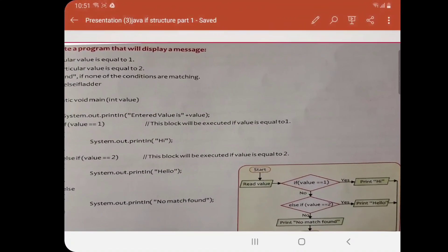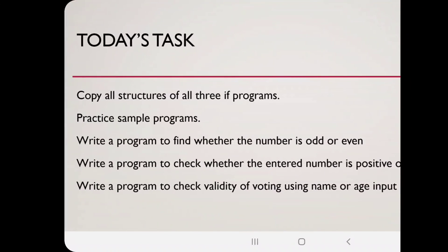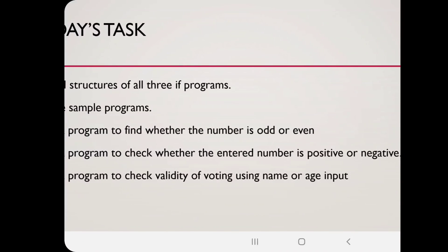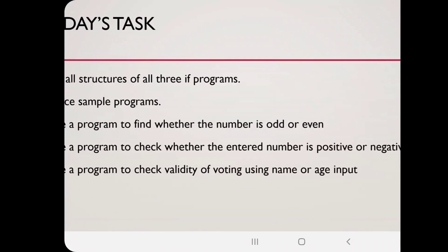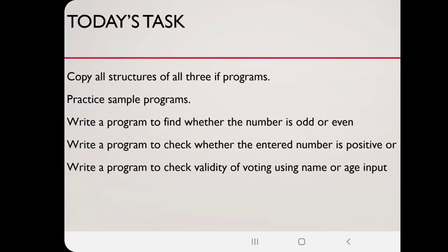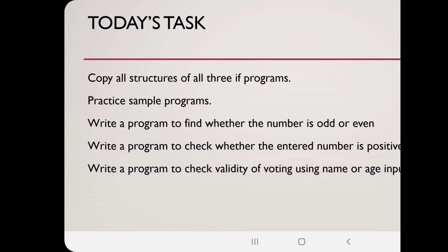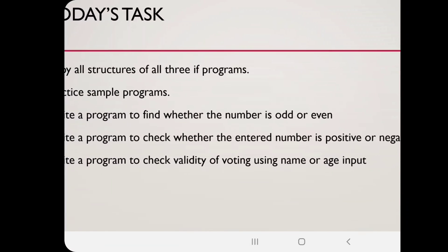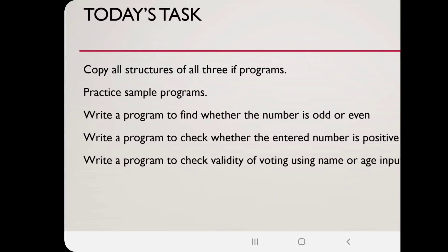This is all about these three programming structures. Hope you get it. For any kind of query, you are most welcome. Today's task: copy all structures of all three if programs. Practice the sample programs that I have made in this video. Write a program to find whether the number is odd or even. Imagine a number and then check if it's odd or even. Remember which if statement to use—you have to decide. Second program: write a program to check whether the entered number is positive or negative. You have to take a number and tell me if it's positive or negative. I'll give you a hint: positive numbers are always greater than zero, so keep the number greater than zero; otherwise, it will be negative. Third program: write a program to check validity of voting using name or age input. You have to enter name and age, and after that, you have to write age is greater than or equal to 18 for voting validity. These three programs you will make along with the sample programs.